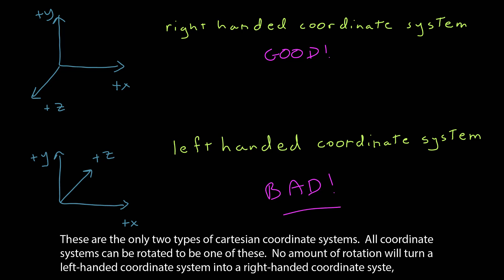And so why is one good and the other bad? These are the only two types of three-dimensional Cartesian coordinate systems. All coordinate systems that you can write down of this type can be rotated to look exactly like one of these. But no amount of rotation will turn a left-handed coordinate system into a right-handed coordinate system.